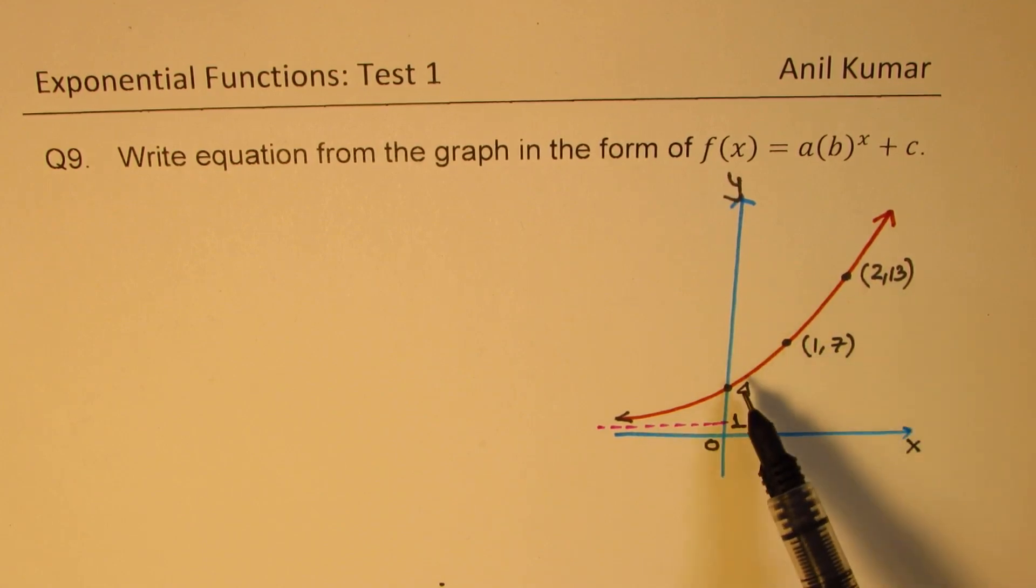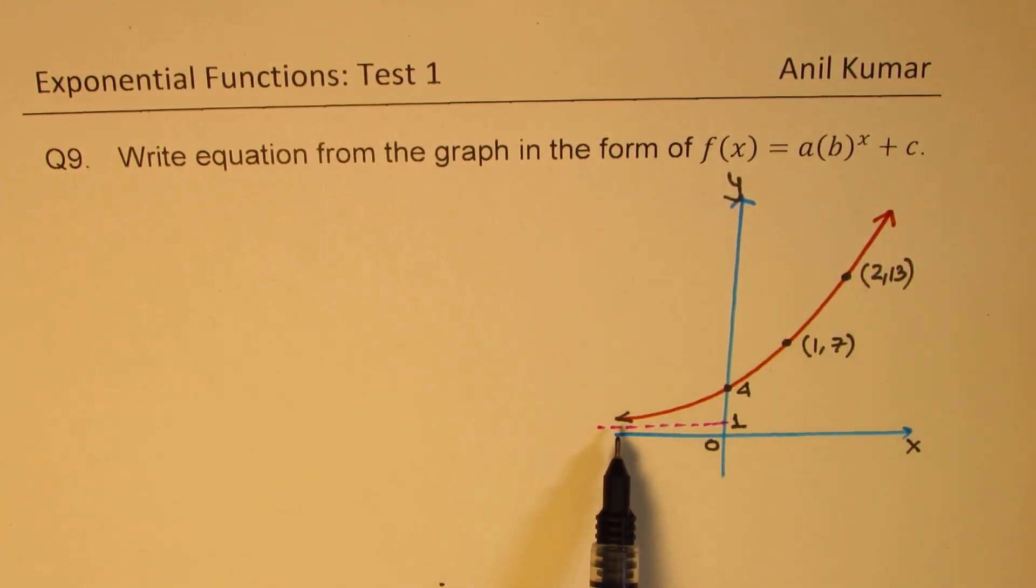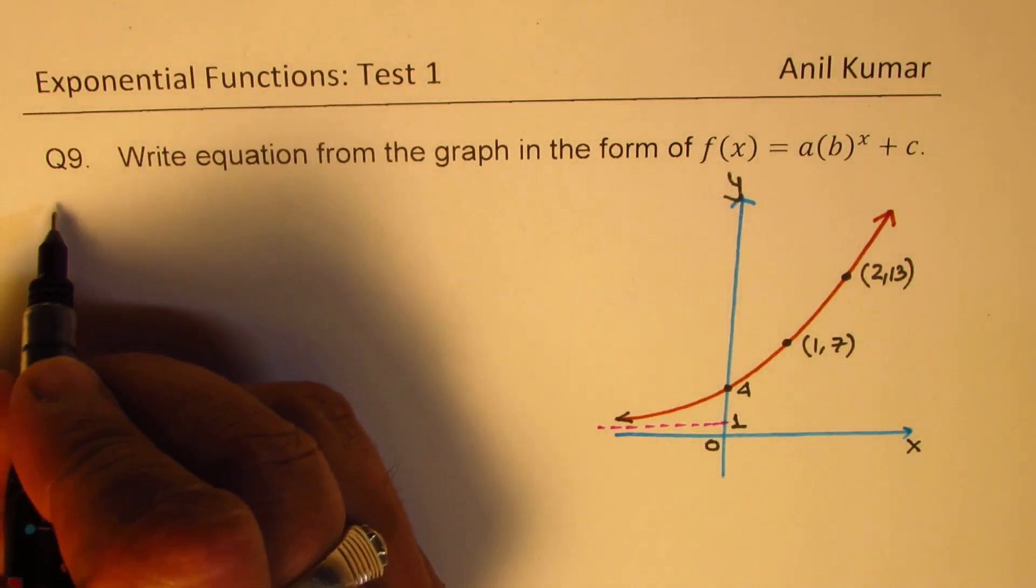We are given three points on this exponential function, and we also see that there is a horizontal asymptote, y equals to 1. The function approaches 1 as x approaches negative infinity. So from this information, you should be in a position to write down the equation. Let's see how to do it.